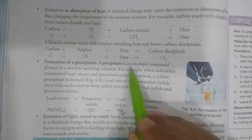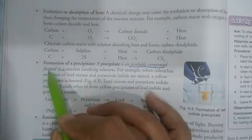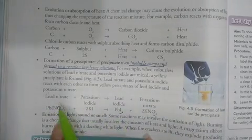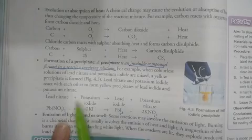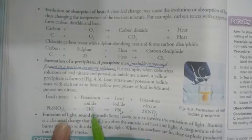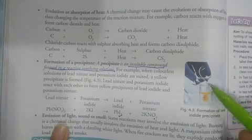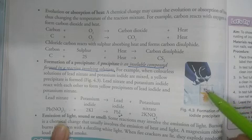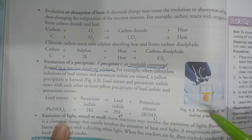A precipitate is an insoluble compound. It is an insoluble compound formed in a reaction involving solutions. Take two test tubes and first form the aqueous solutions of lead nitrate and potassium iodide. When we mix them together, a yellow precipitate of lead iodide is formed. If an insoluble compound is formed, this is also a chemical reaction.